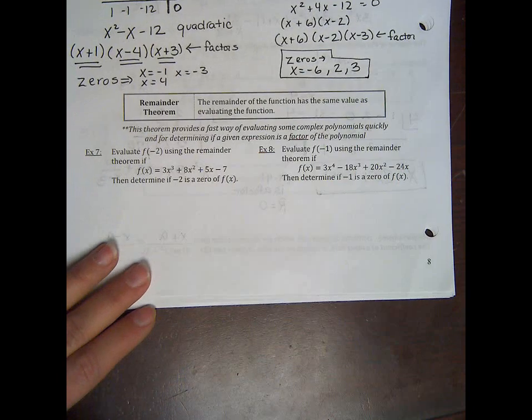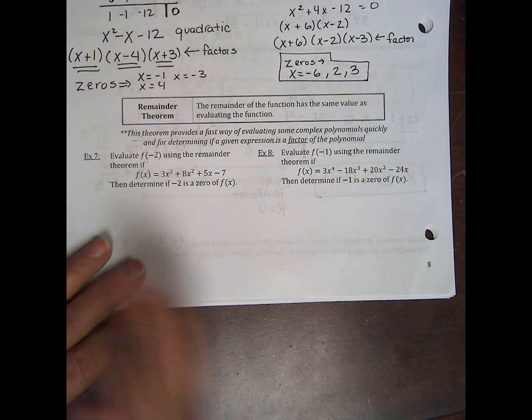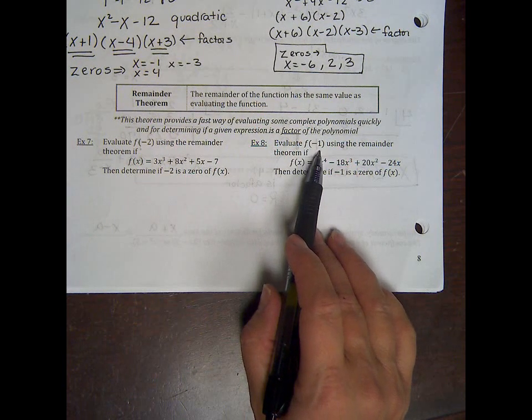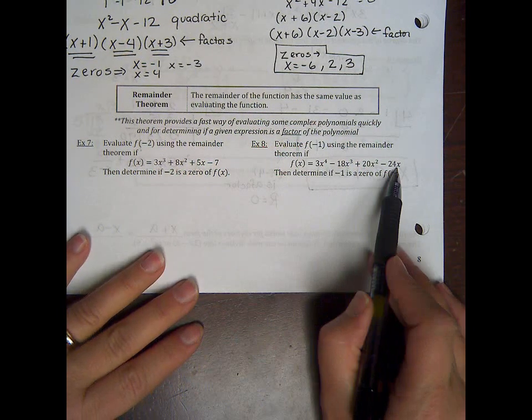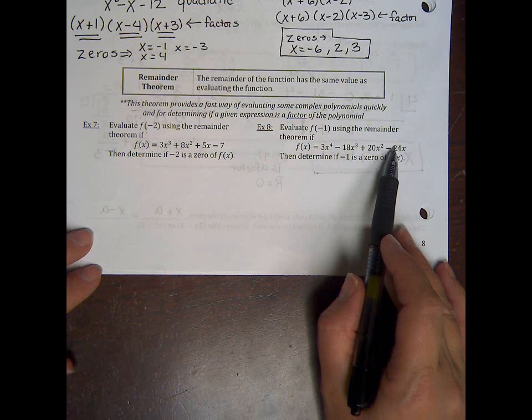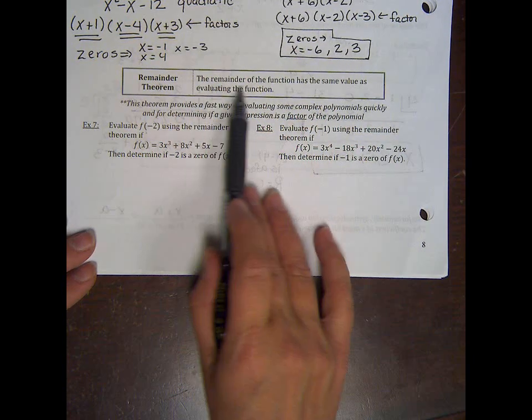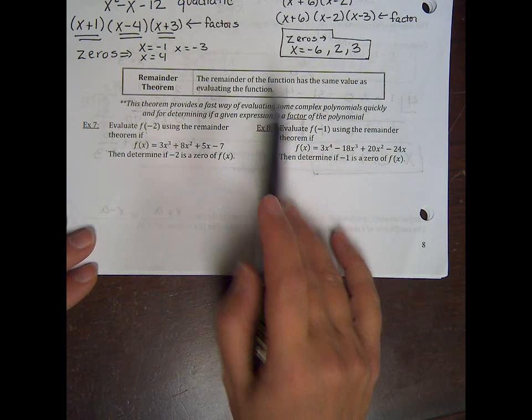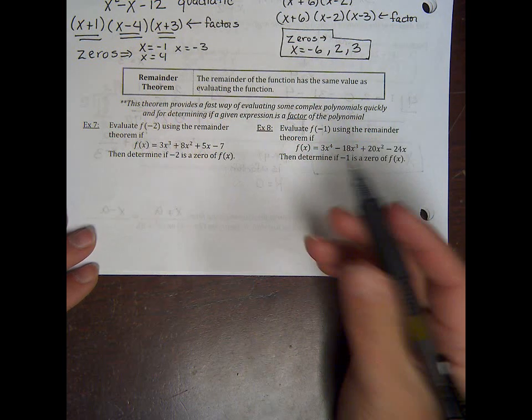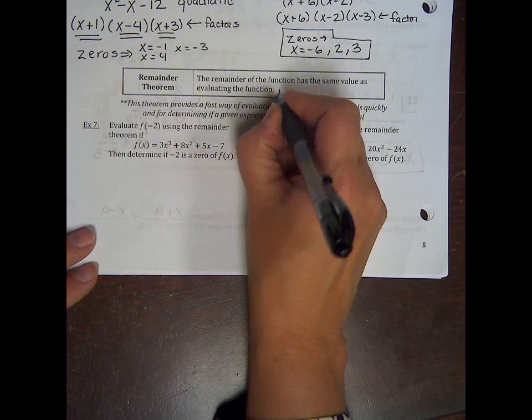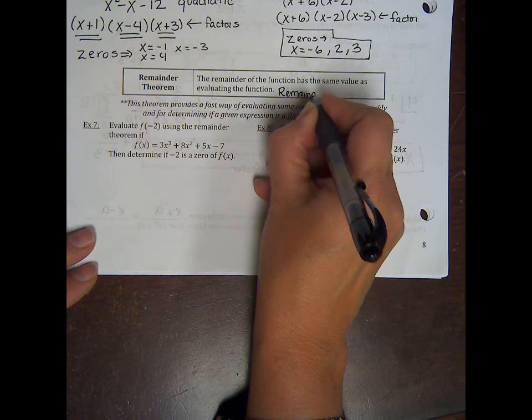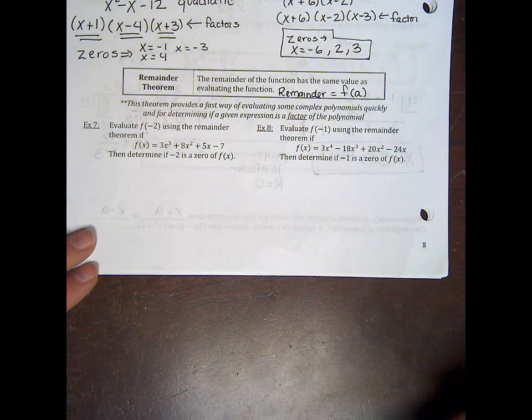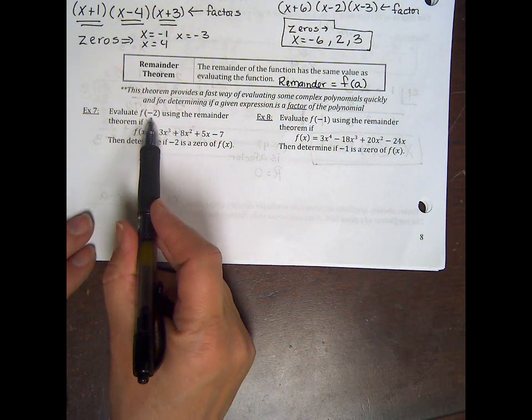Okay, last part, remainder theorem. So the remainder theorem is very handy. There are a lot of times where maybe you want to find what f of negative 2 is, or f of negative 1 is, and we know that just means plugging it in for x. Sometimes it's even easier just to synthetically divide. If the remainder of a function has the same value as evaluating the function. So in other words, when we divide by x minus a, the remainder after dividing is equal to f of plugging in that a value.